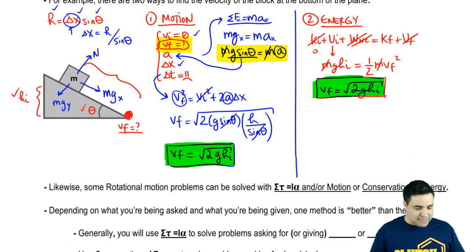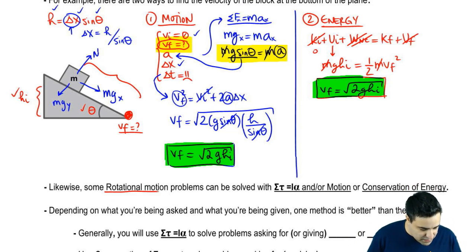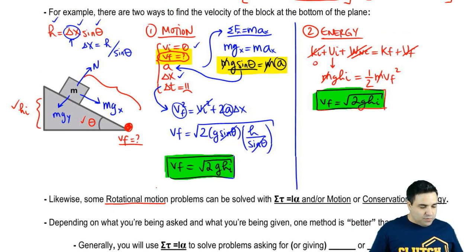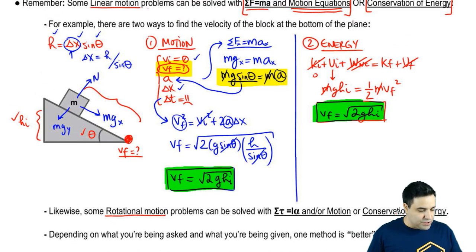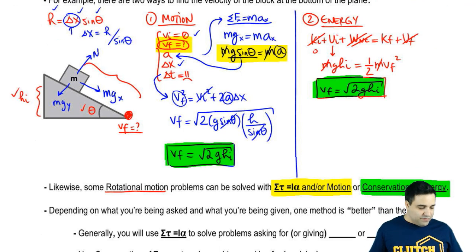So similar to how there's two ways to solve problems, we're going to have the same thing in rotational motion. Some problems, instead of being solved with F=ma and motion equations, will be solved with torque equals I alpha and motion equations. And we're also going to have problems that we're going to be able to solve using conservation of energy. Okay? If you have the choice, which most of the time, unfortunately, you don't, you're going to want to pick this one, right? Because it's easier.